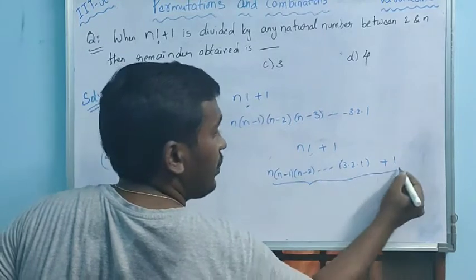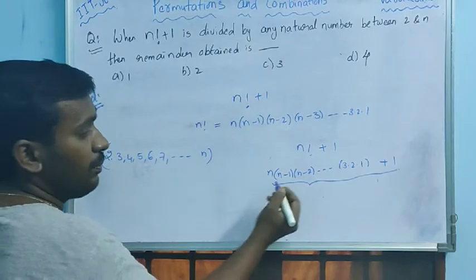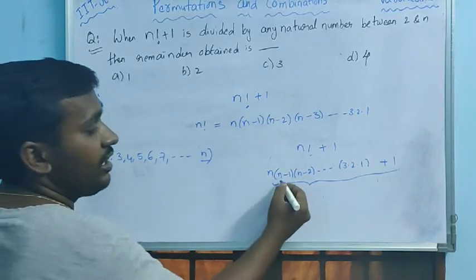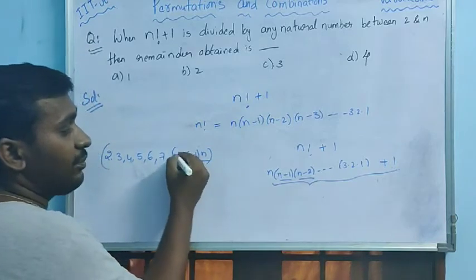Here, this total is divided by any one of these numbers. Suppose if you take n number, here is n. If you take n minus 1, here is n minus 1. If you take n minus 2, here is n minus 2.